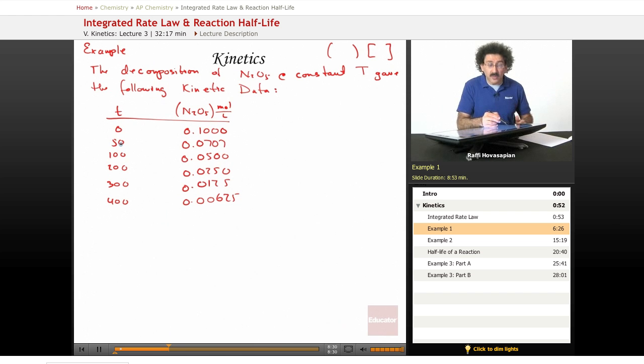At different time intervals, we measure the concentration of reactant left in the flask, and these are the concentrations that we got. Now, we want to know what the order of this reaction is and what the rate constant is. So let's start.